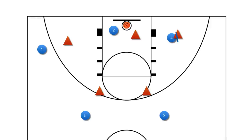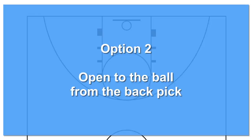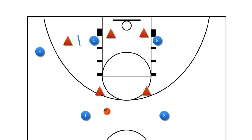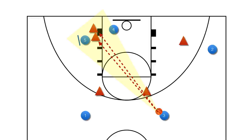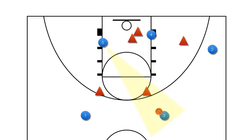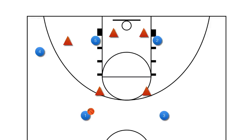Option 2 comes after the back pick is set. The screener should always open to the ball with hands ready to receive the pass. This option opens up when there's no communication by the defense and two defenders end up covering our one cutter. When the back pick is set, our player with the ball makes the same read of the defense — if we see both defenders move to cover our cutter, the player who set the back pick will open up to the ball and look for the entry pass. Lack of communication is the number one cause for defensive breakdowns, and you'll be surprised at how often you'll see this pass wide open. Be patient and look for scoring opportunities rather than trying to force them.